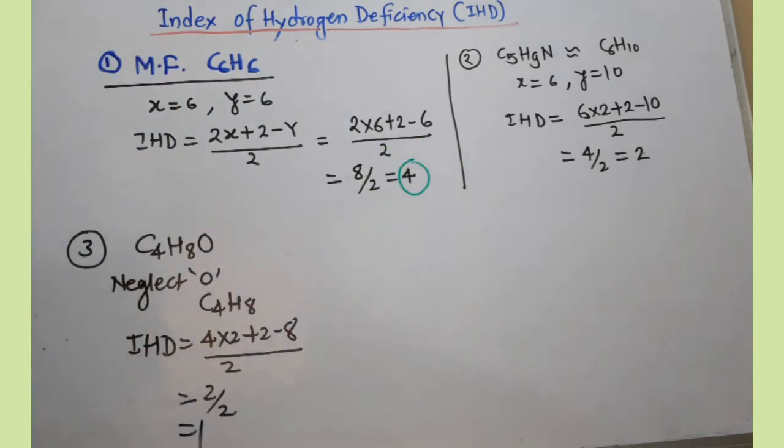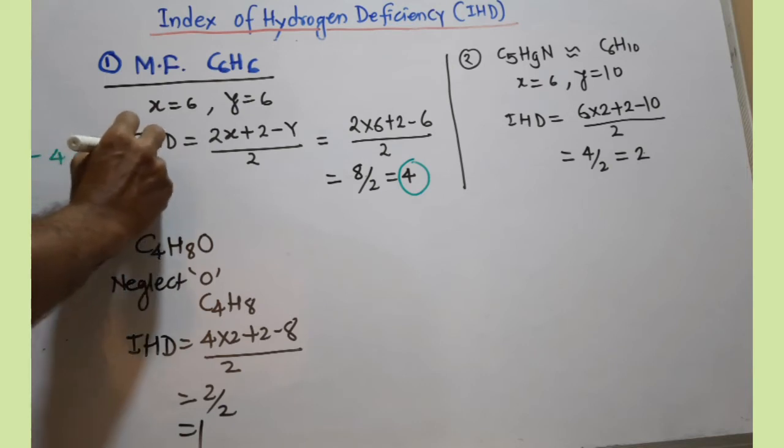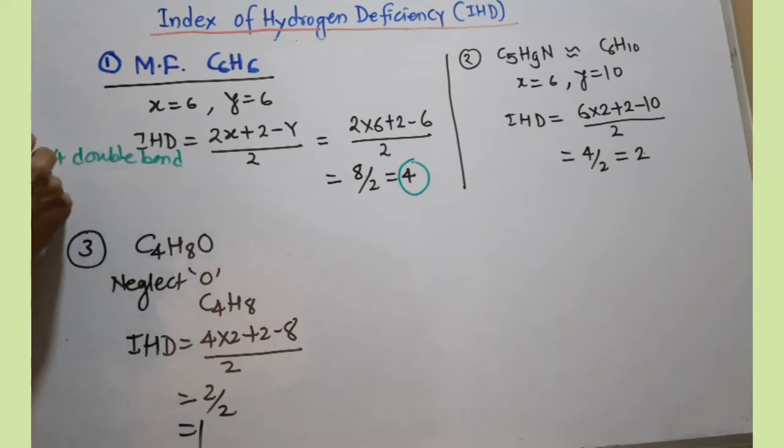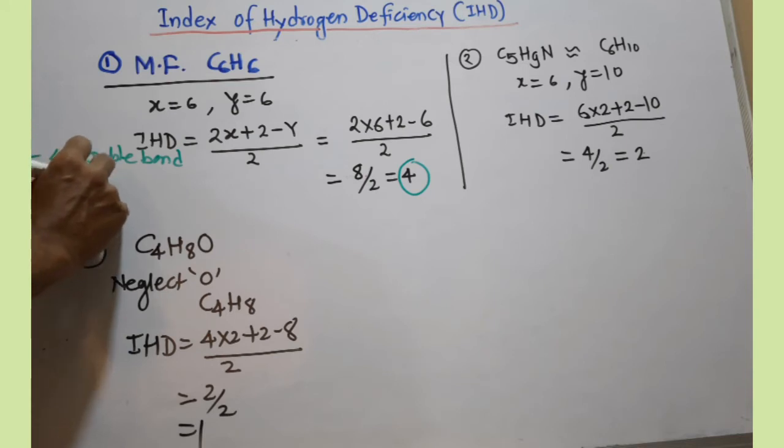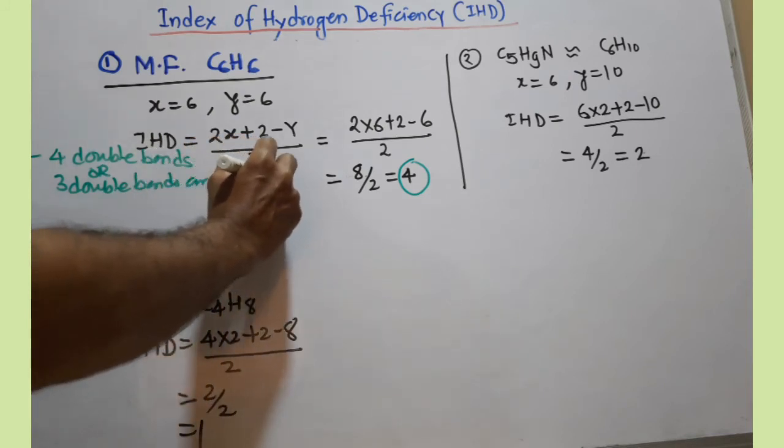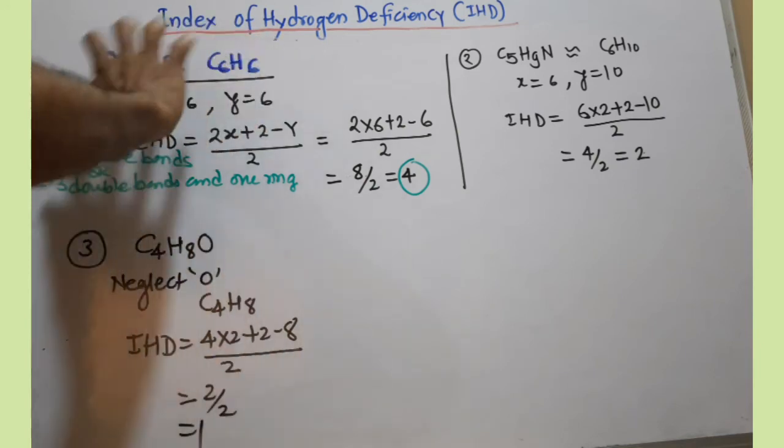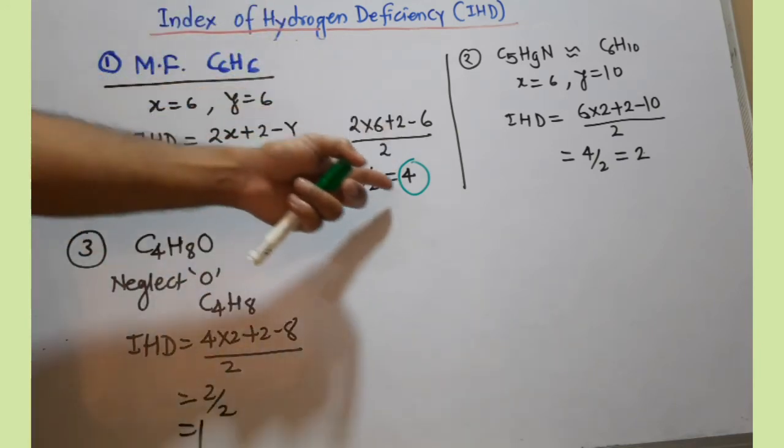From IHD, you can draw different conclusions. There must be four double bonds, first conclusion. Or another conclusion: three double bonds and one ring. Or you can find two double bonds and one triple bond, and so on. You have to draw different conclusions from the IHD.